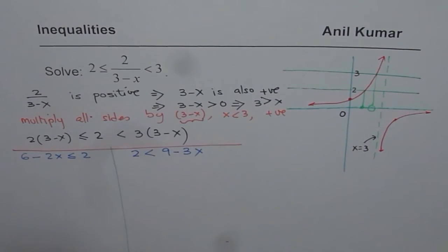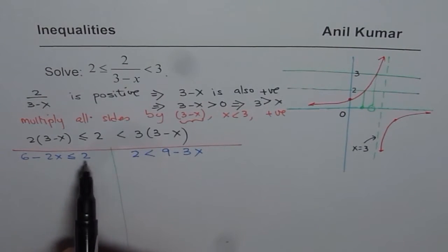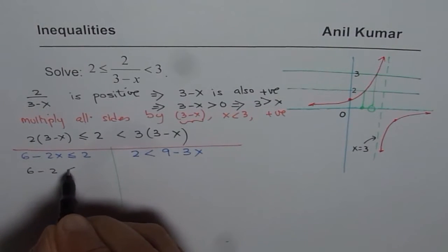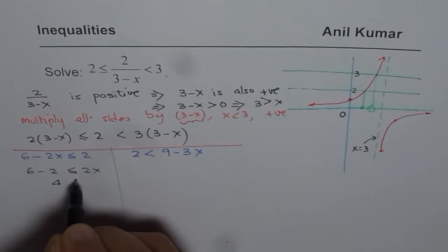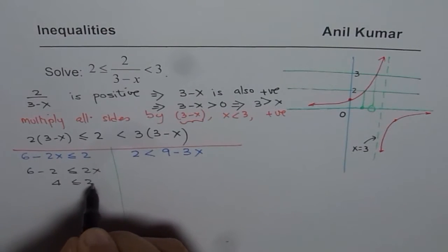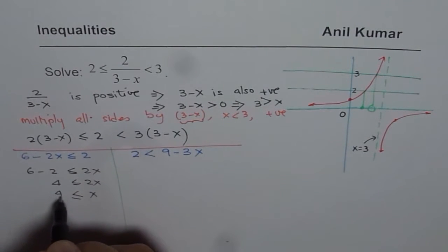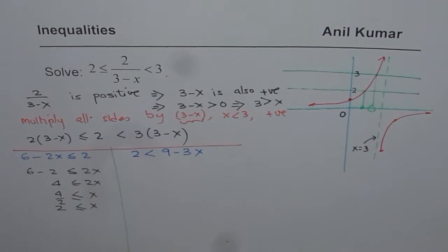Solving the left inequality 6 − 2x ≤ 2: bring −2x to the right and 2 to the left, giving 6 − 2 ≤ 2x, so 4 ≤ 2x, which means x ≥ 4/2, or x ≥ 2. That is one part of the solution.